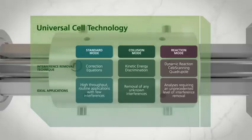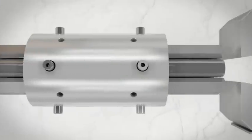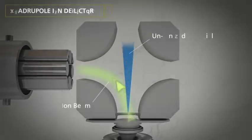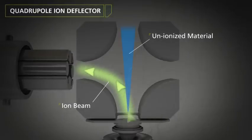The instrument has been engineered with a unique quadrupole ion deflector that turns the ion beam 90 degrees before it enters the universal cell and quadrupole mass filter, providing unparalleled stability and reducing background and interferences for the most accurate results.